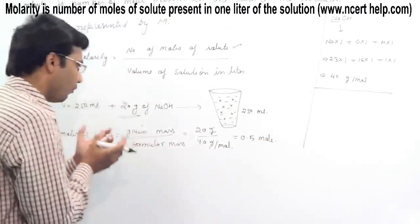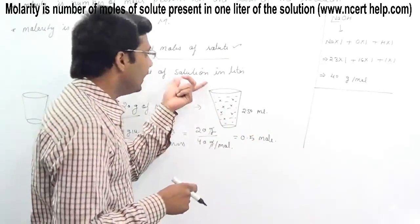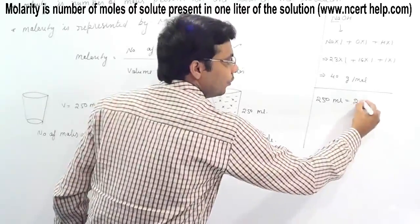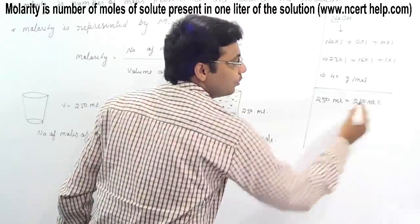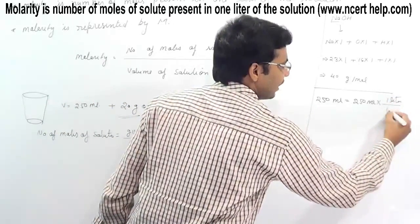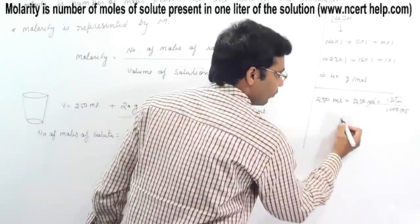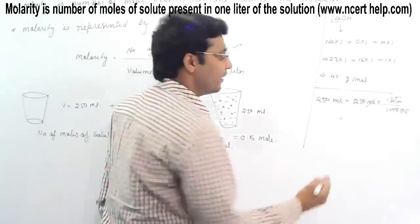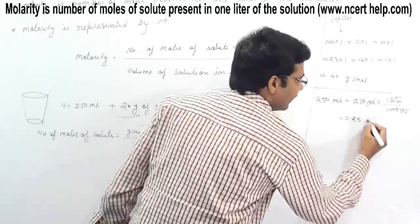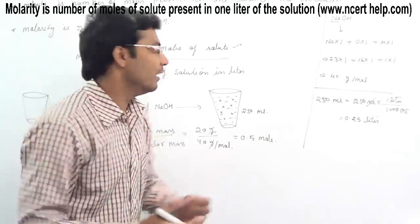The volume is 250 mL, but we need to convert it to liters. 250 mL multiplied by the conversion factor: 1 liter equals 1000 mL, so the mL cancels out. 250 divided by 1000 gives 0.25 liters. So the volume of the solution is 0.25 liters.